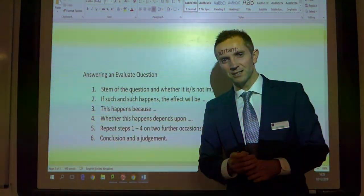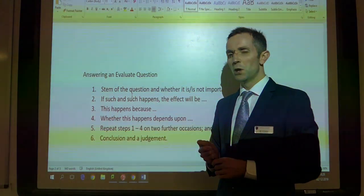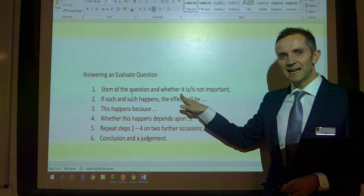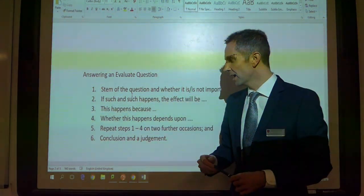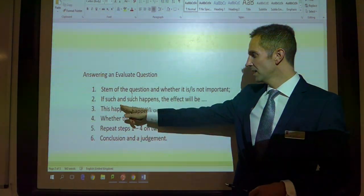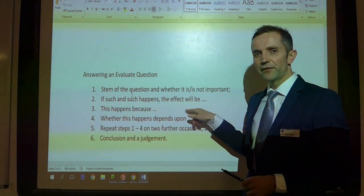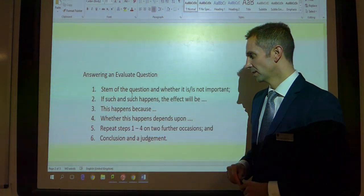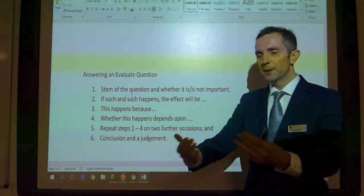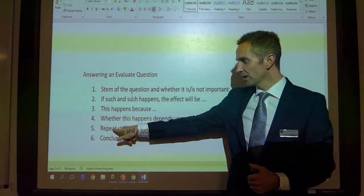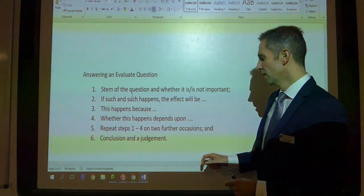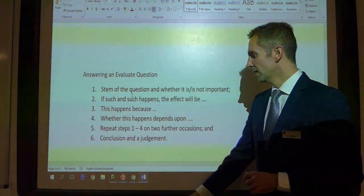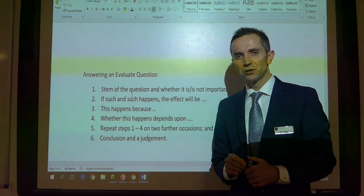This is my six-step guide to ensuring that you achieve full marks. Number one: the stem of the question and whether it is or is not important. Number two: if such and such happens, the effect will be — explain. Point number three: this happens because. Number four: whether this happens depends upon. Number five: repeat steps one to four on two further occasions, just to go a belt-and-braces approach to your answer. And then number six: a conclusion and a judgment.